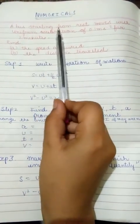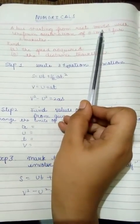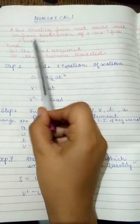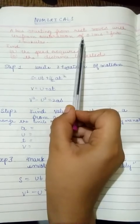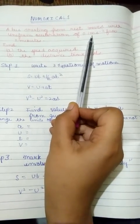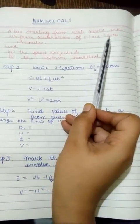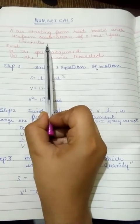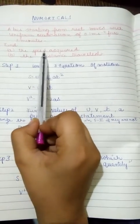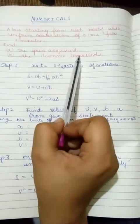A bus starting from rest moves with uniform acceleration of 0.1 meter per second square for 2 minutes. Find speed, find the distance travelled.